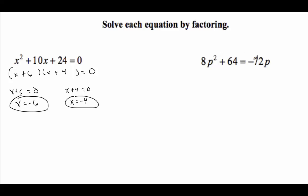Over here I need to add 72p, so 8p squared plus 72p plus 64 equals 0. Alright, common factor, yeah I can take an 8 out of all of that. Two numbers that multiply to 8 and add to 9: p plus 8, p plus 1.